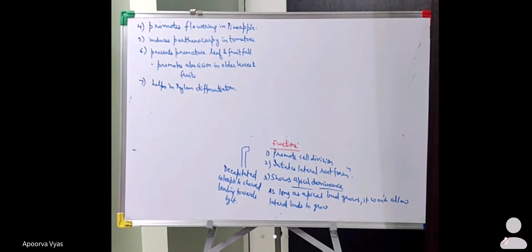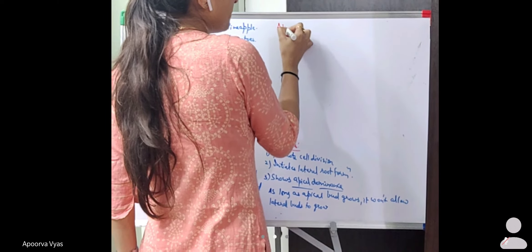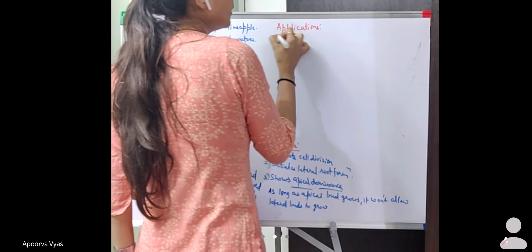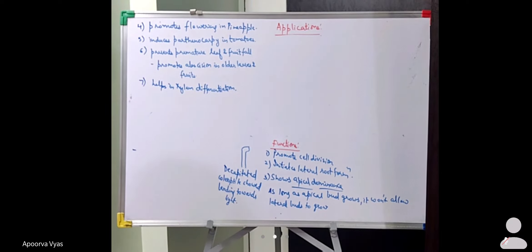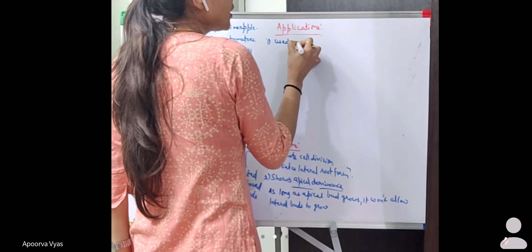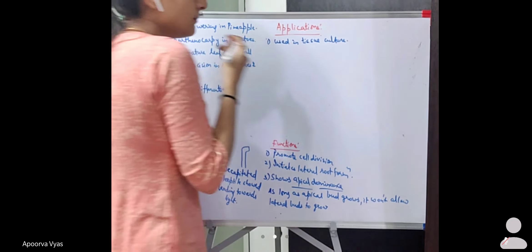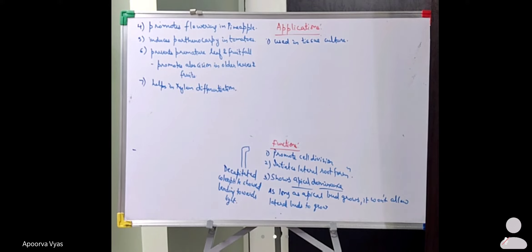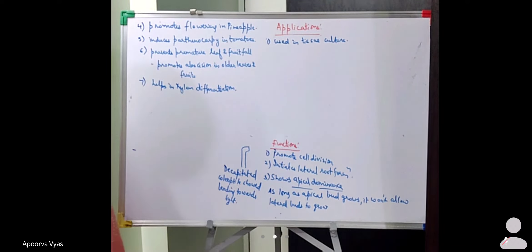Applications of auxins: first, auxins are used in tissue culture, where phytohormones like auxins and cytokinins are provided externally to grow plants from a cell to a plantlet, which is then transferred to the field. Second, auxins can be used to obtain plants from stem cuttings by spraying auxin on the stem.